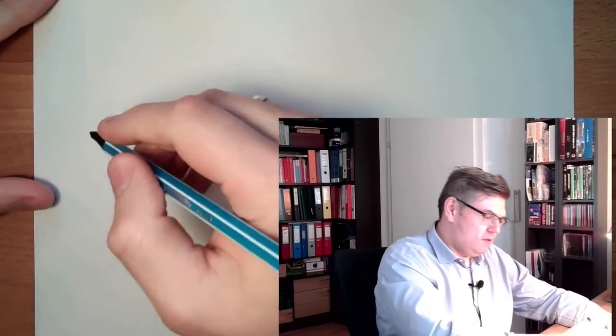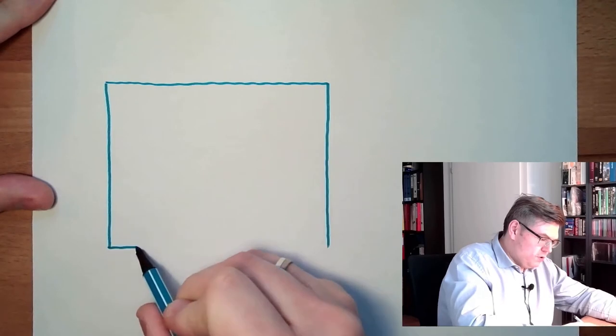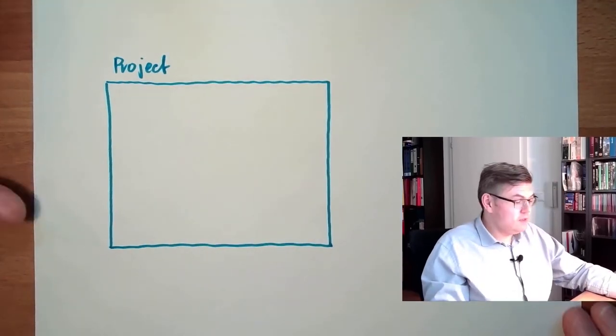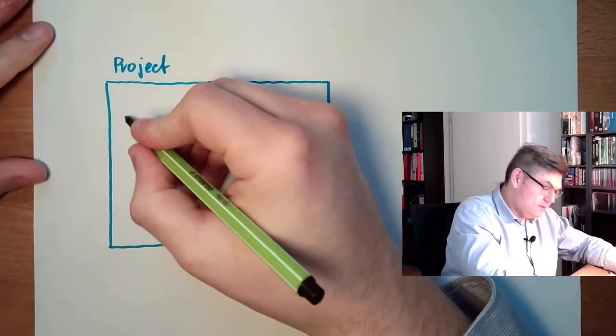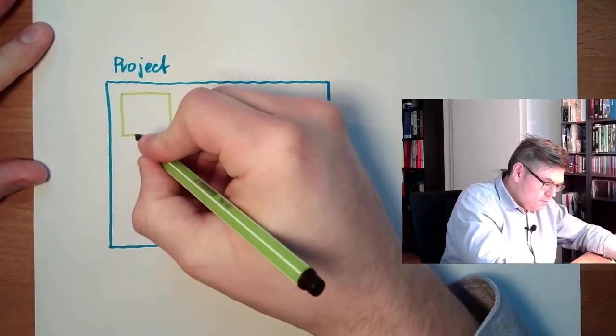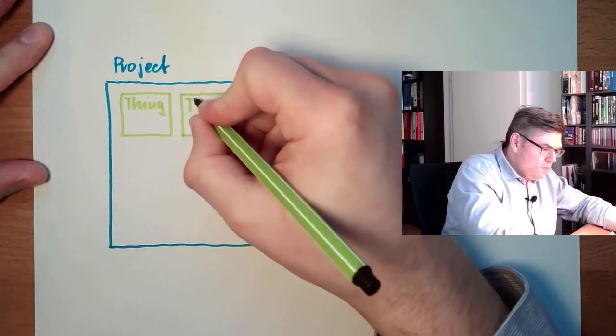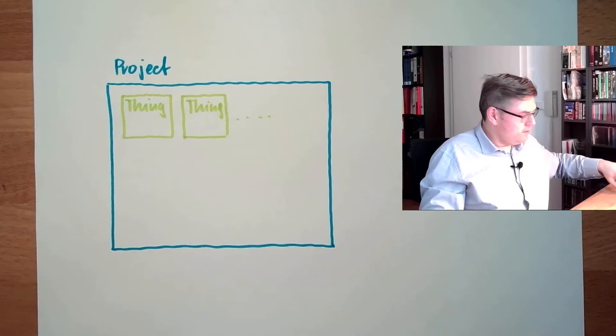The thing which is holding everything together is called a project. This is the organizing scheme in ThingWorx. We have a project, and these projects can contain one or more so-called things. There can be as many things as we want. Things have a name, and most important, let's have a look at what things contain.